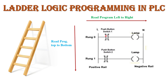In rung 0, the first input uses switch buttons or push buttons, and on the right-hand side we map the output, shown in the form of a lamp, motor, etc. In this way we give input and output instructions in each rung, and the processor of the PLC reads the ladder logic program from left to right and top to bottom. This is the basic concept of ladder logic programming in PLC.